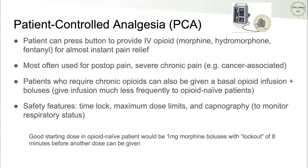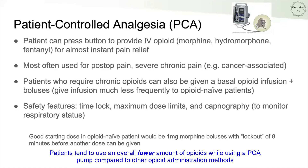To wean a patient off a PCA, first start oral opioids, then gradually increase the lockout times and decrease the bolus amounts in a hybrid approach until the PCA can be discontinued entirely. Perhaps counterintuitively, patients on PCA pumps overall use less opioids because pain control is more targeted — addressing immediate pain episodes right away.